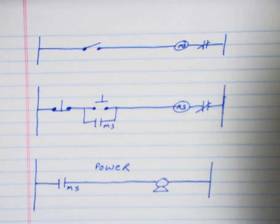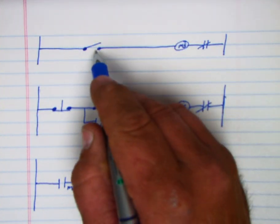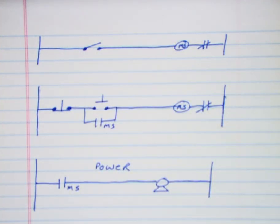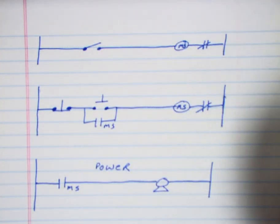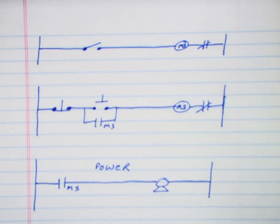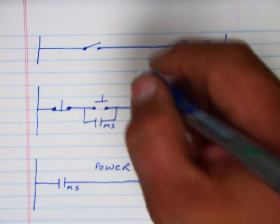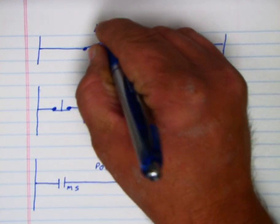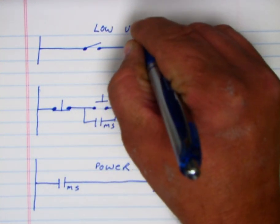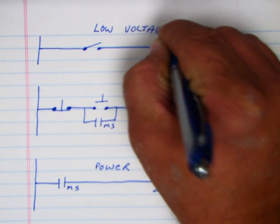Now, this top version here uses a maintained switch to turn this motor starter, to energize the motor starter coil, which pulls in our contacts and turns this motor off and on. If we're using a maintained switch up here, so just a toggle switch, could be a light switch on a wall, we call this low voltage release.